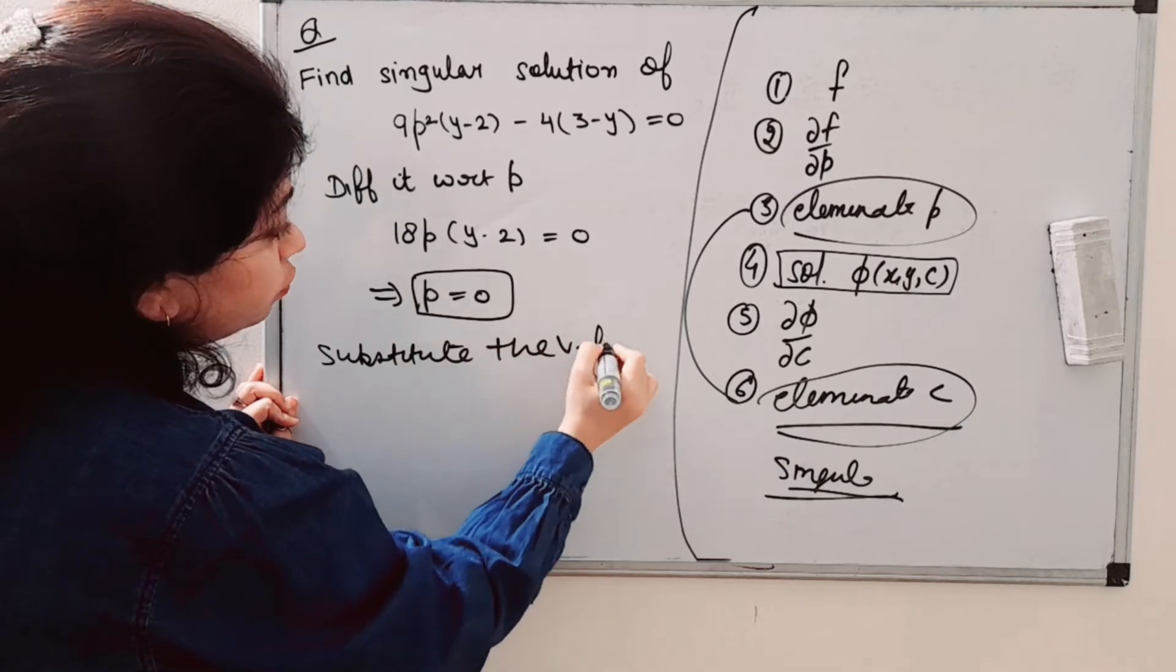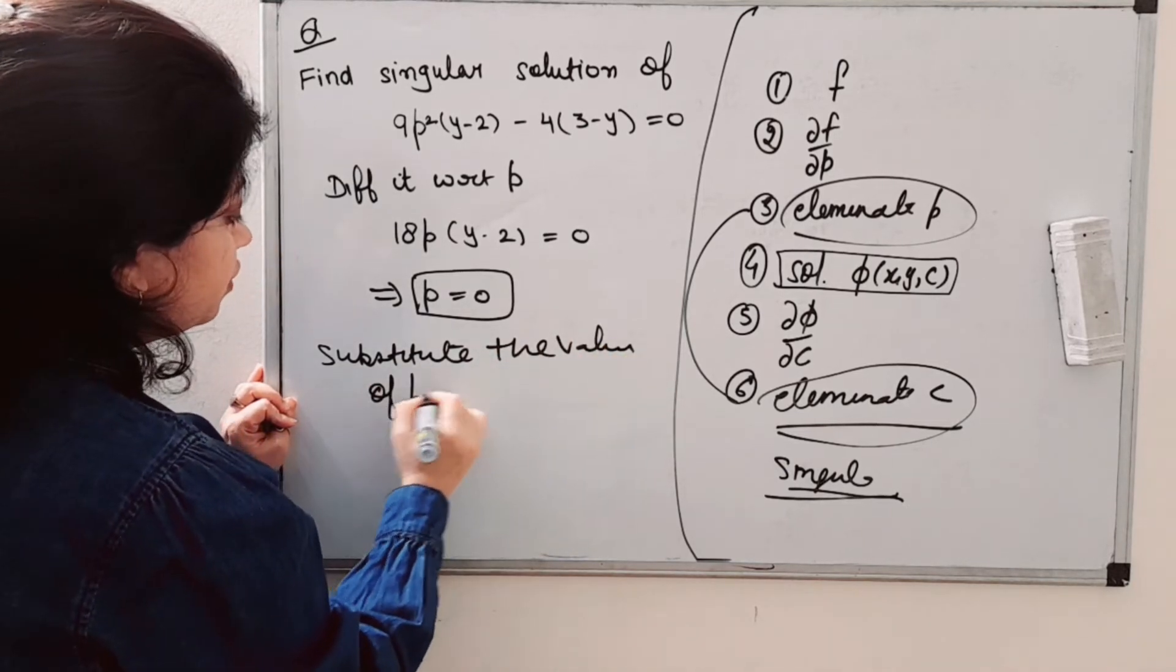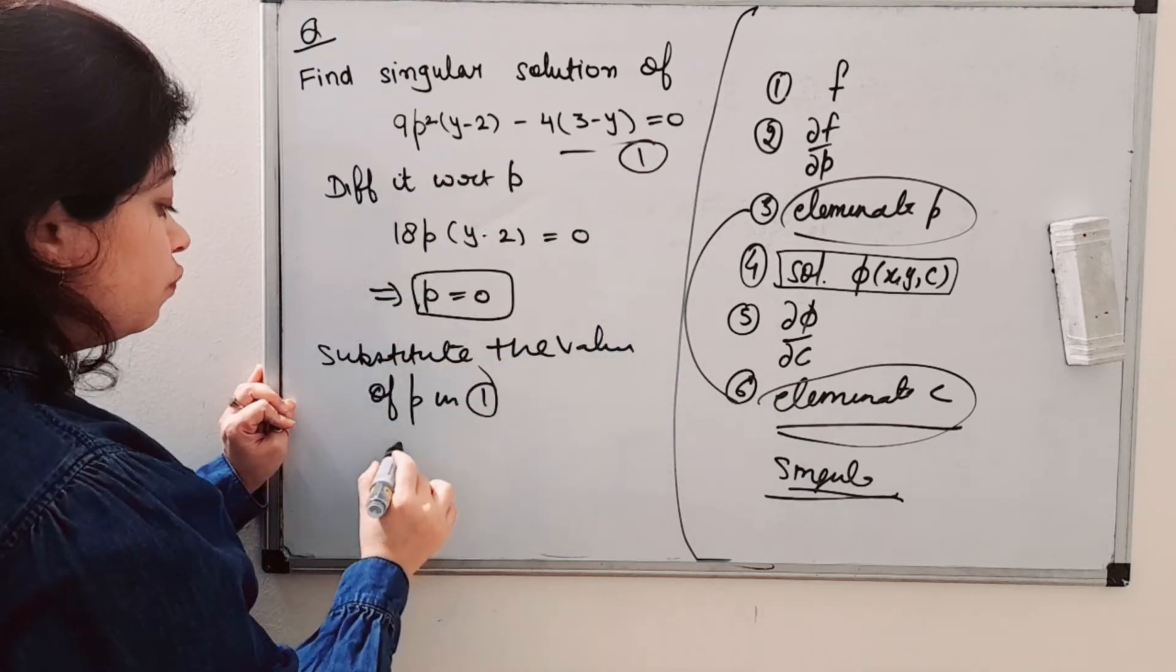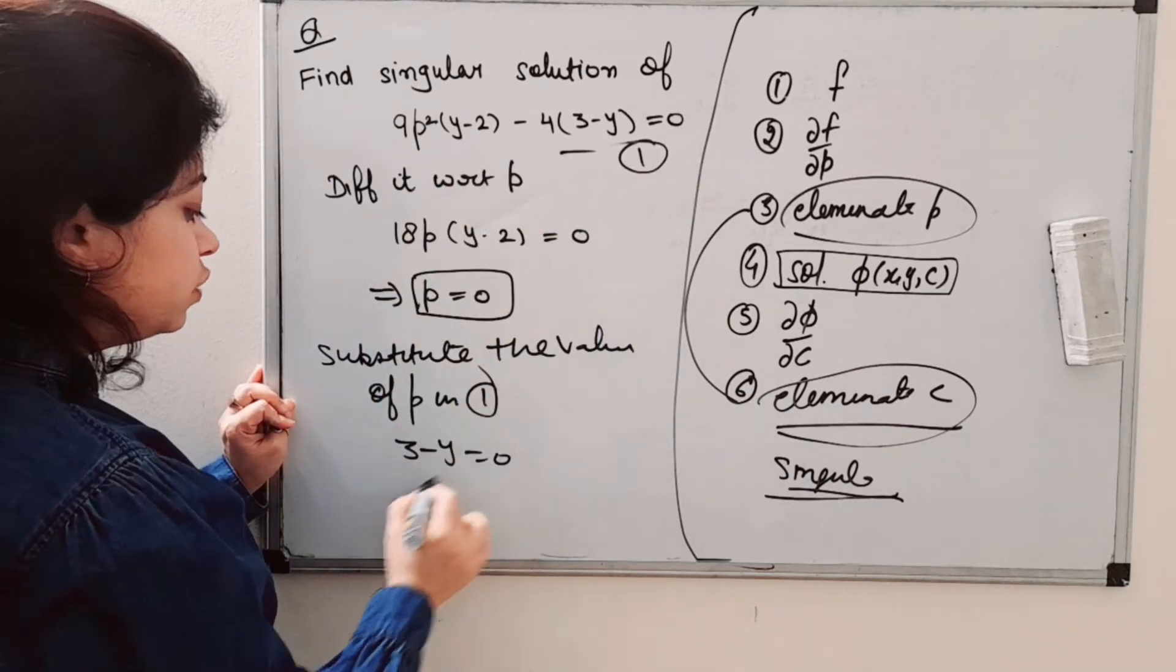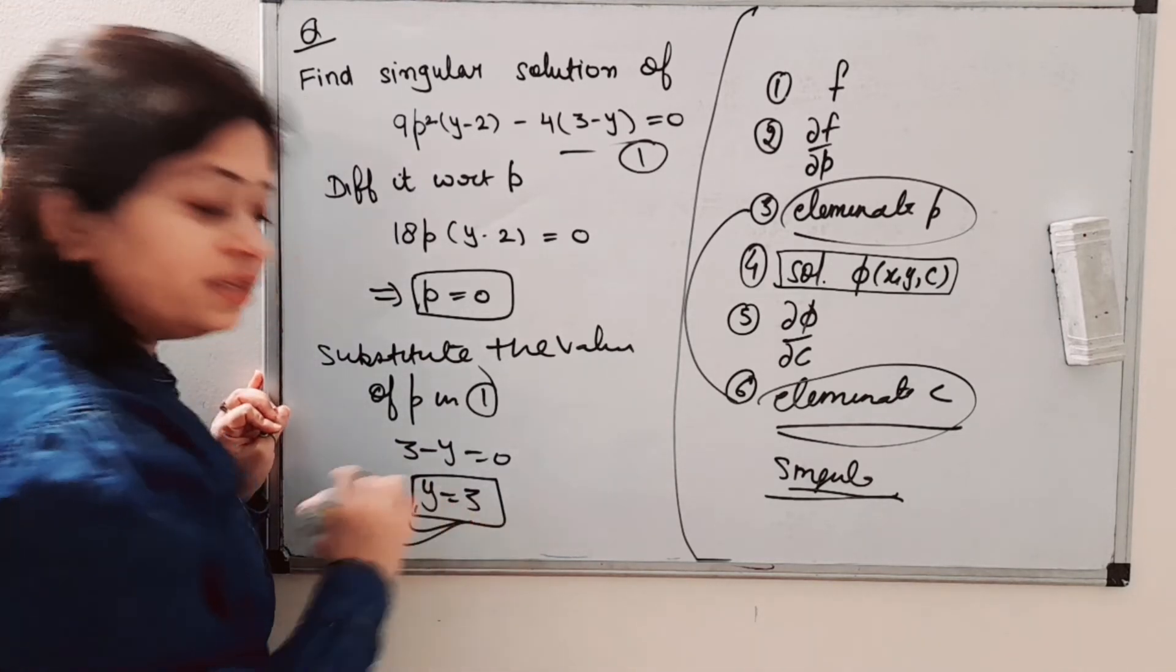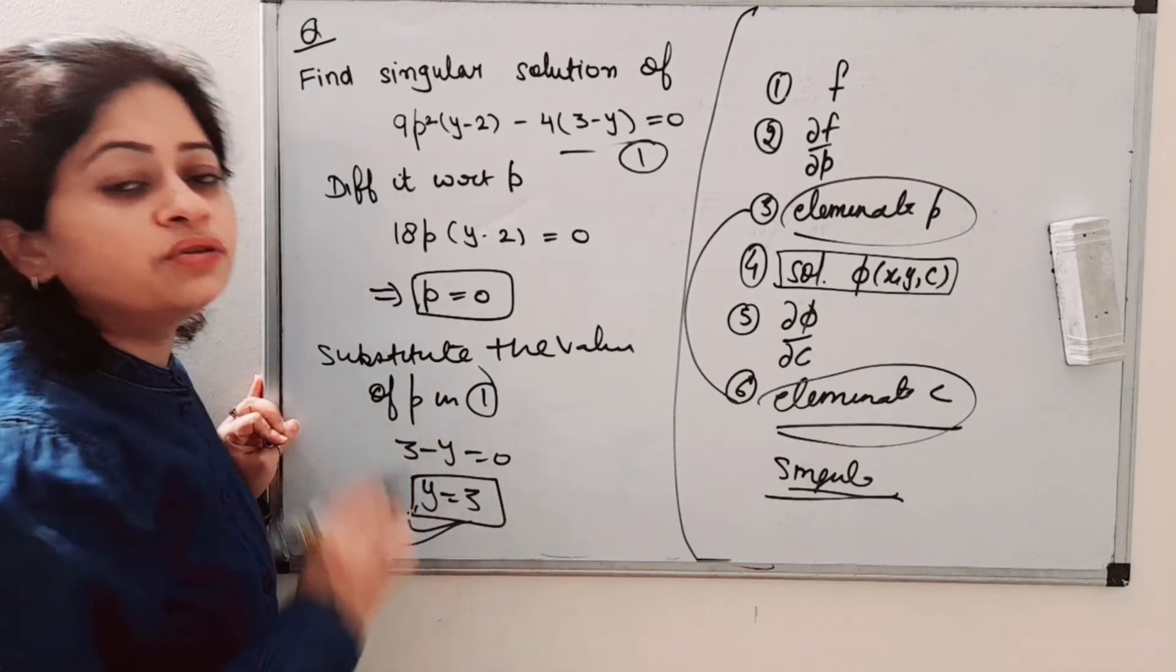Substitute the value of p in equation 1. We get 3 - y = 0, so y = 3. We get only one solution, which means this is the singular solution.